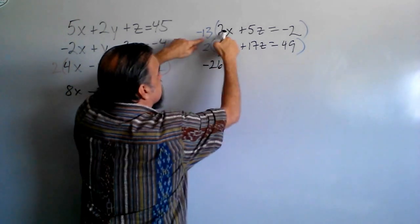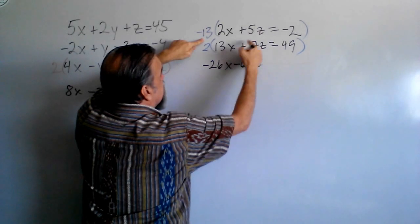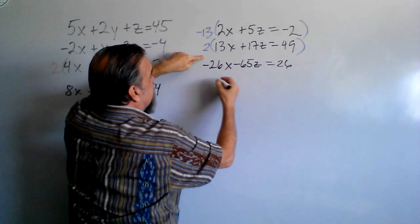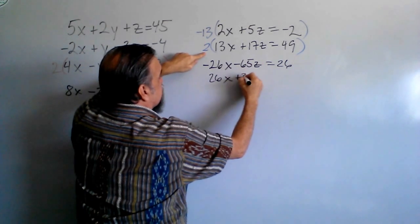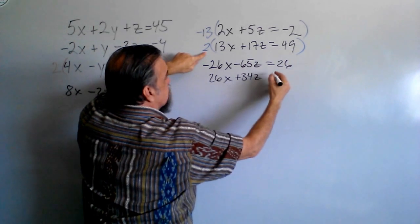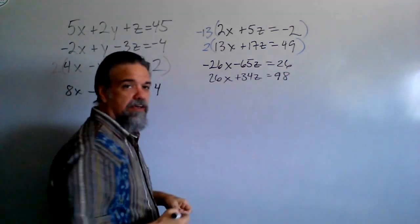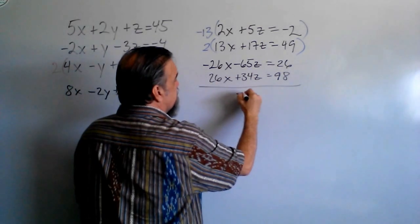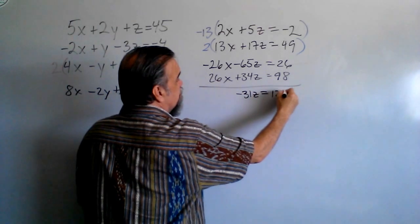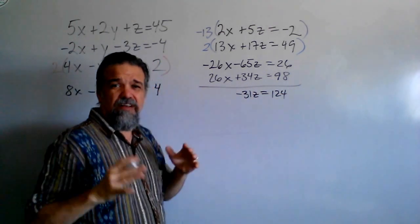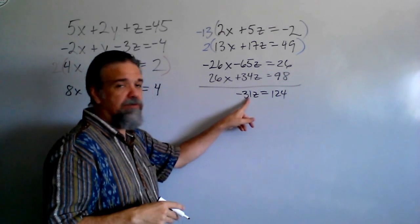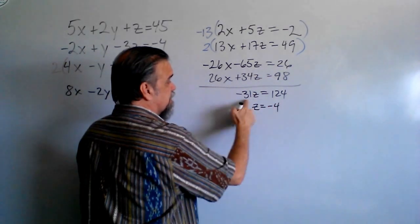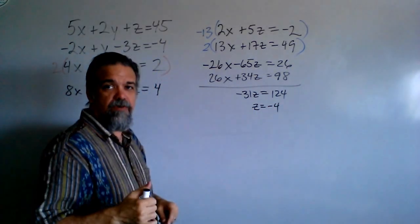Negative 26x minus 65z equals negative 13 times negative 2 is positive 26. And here I have 26x plus 34z gets me 2 times 49 is 98. And now, when I add these up, the x's go away, and I've got negative 31z equals 124, which at first you think, oh god, no, actually it's not that bad at all. 124 divided by 31 is 4, so that means z is going to be negative 4, because we get a positive divided by the negative. All right, cool, we got one of our variables taken care of.